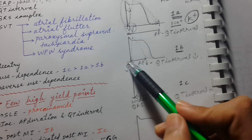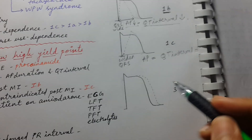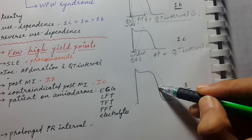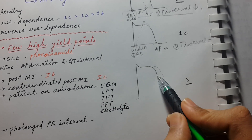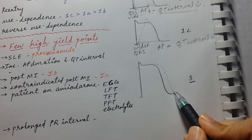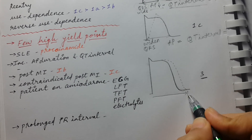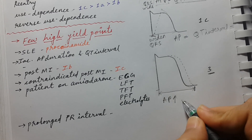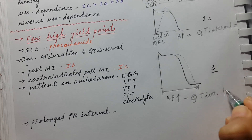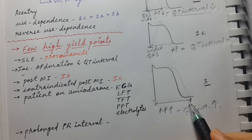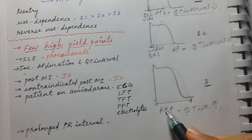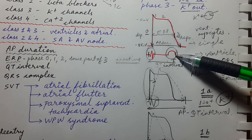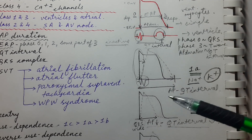For class 3 potassium channel blockers: since they block potassium channels, they affect phase 3. After the drug, the action potential duration increases. As APD increases, the QT interval also increases. There is no effect on phase 0, so there is no effect on the QRS complex. The key takeaway is knowing how to compare the action potential graph with the ECG to understand and answer exam questions.